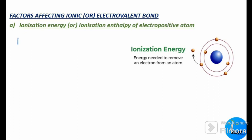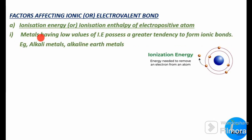When an atom releases an electron — when it loses an electron — it forms a cation. So, lesser the ionization energy, greater will be the tendency of the atom to release an electron and form a positive ion, that is a cation. More easily it forms the ionic bond. Metals having low values of ionization energy possess a greater tendency to form ionic bonds.